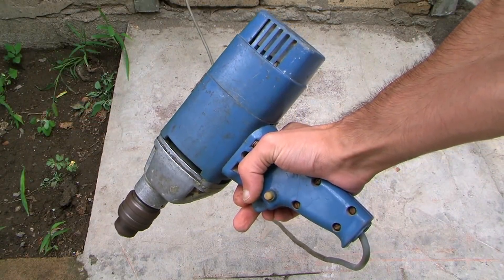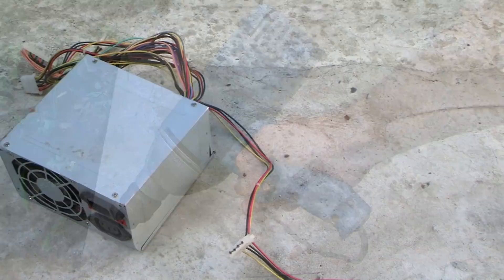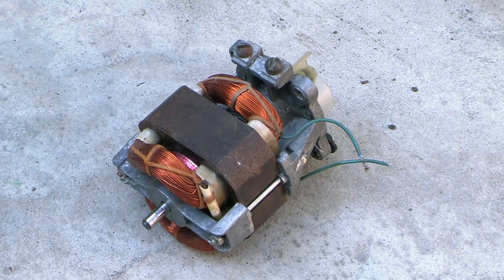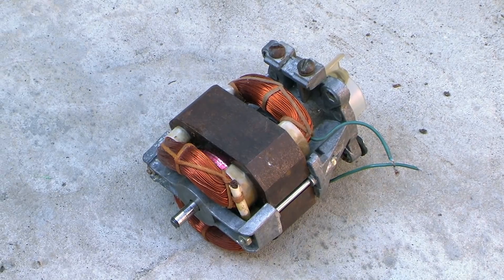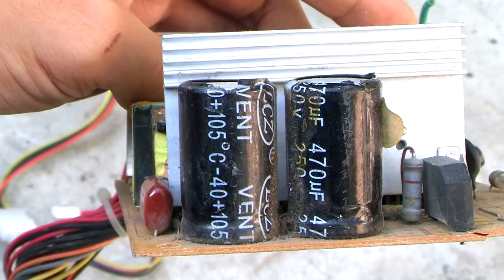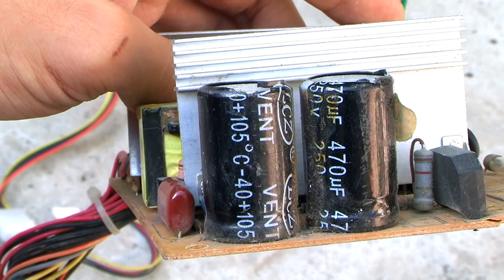This is called starting current, and very often the engine of your washing machine or computer power supply goes out of order at the moment of being connected to mains. In impulse power supplies, there are capacitors of large value.